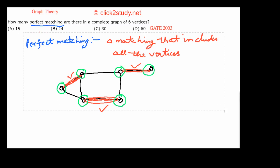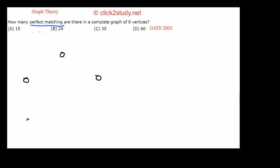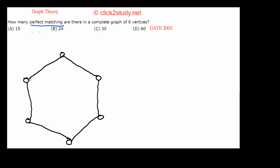Now we answer how many perfect matchings are in a complete graph of six vertices. I'm going to draw K6. This is the first vertex, second, third, fourth, fifth, and sixth. It's a complete graph, so every vertex is connected to every other vertex.